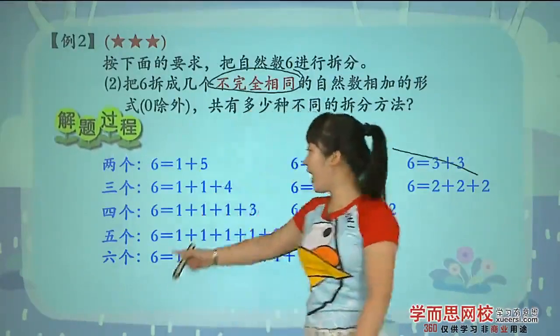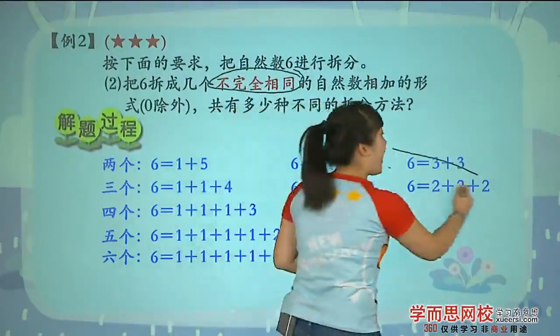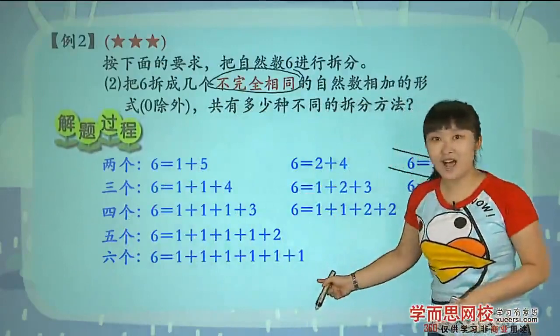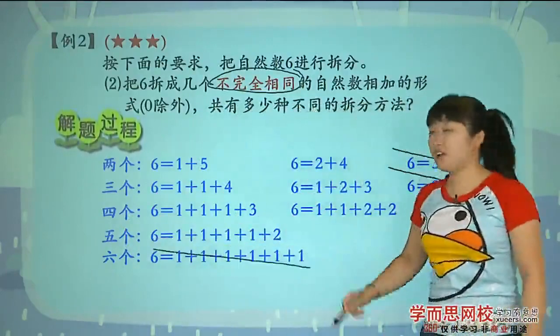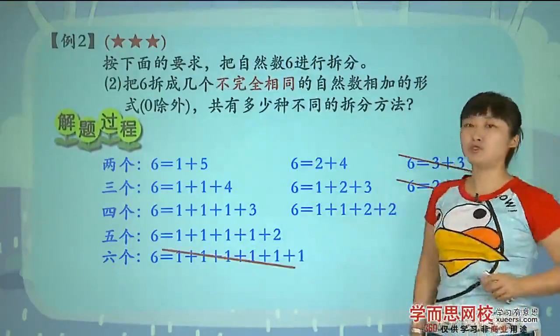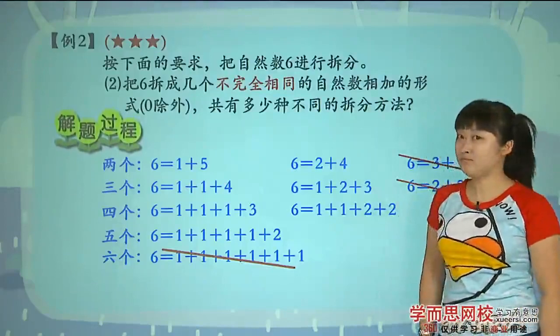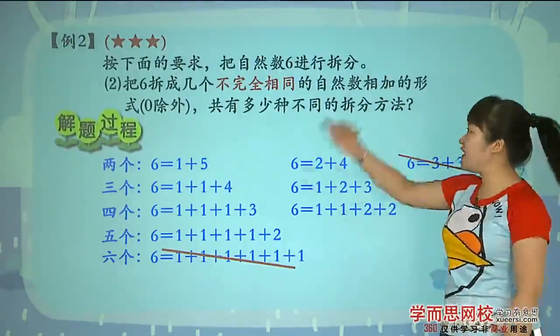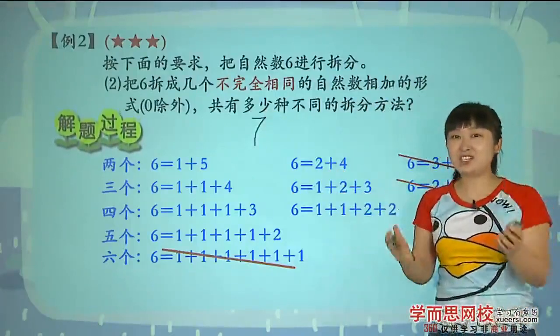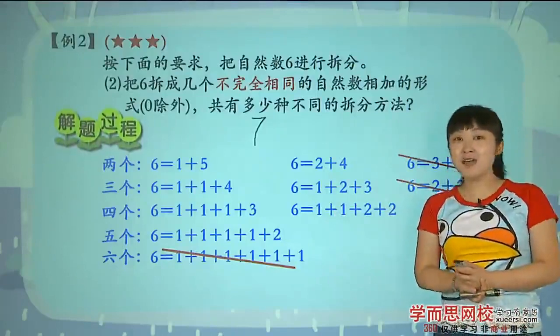注意了那现在人家说了不完全相同,我就清楚了,就是把这里面那些完全相同的给它去掉,剩下的就是不完全相同的。我们赶紧来去一去,咱们现在就在原来的这个题目的基础上来去掉一些算式。不完全相同找一找,六等于三加三要不要,不要非常好去掉。还有没有呢,有啊,六等于三个二相同这叫完全相同,给它去掉。还有没有,当然有在哪儿呢最后一个,这个叫做完全相同。